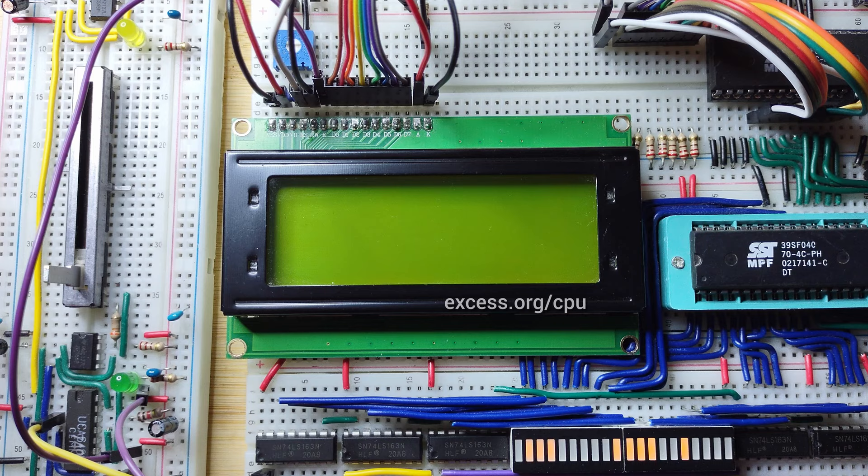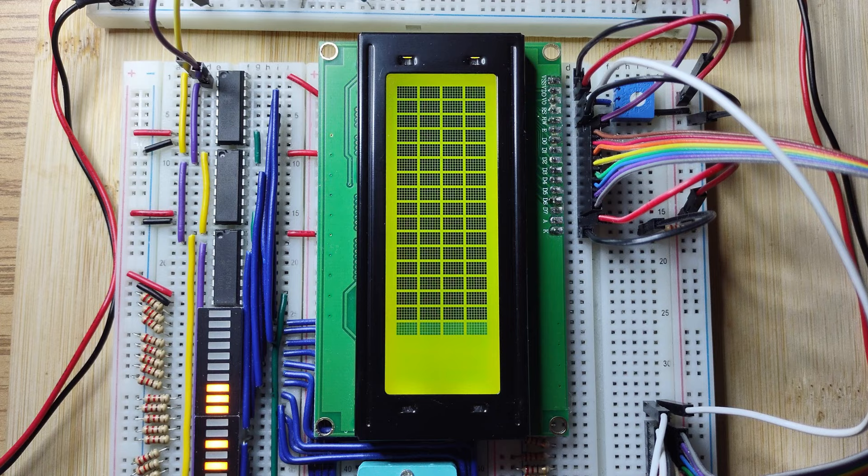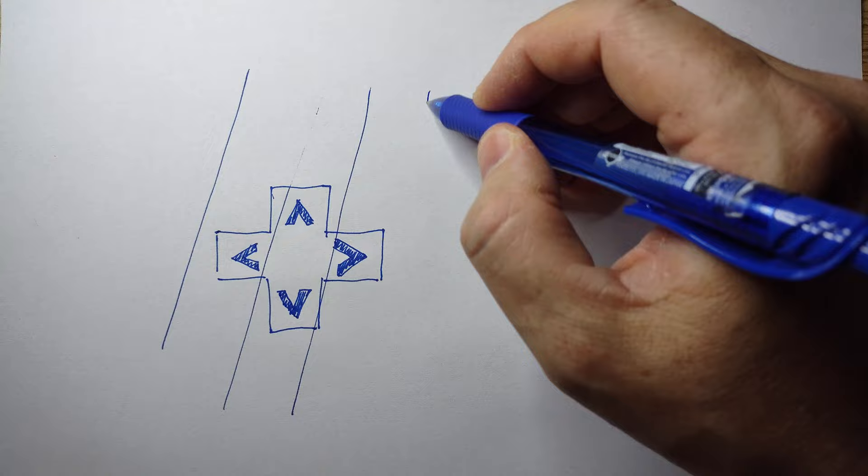Our character LCD will be rotated, so where normally we have four rows of 20, 5x8 pixel characters, now we have 20 rows of 4, 8x5 pixel characters. Six symbols but four characters per row means some symbols will have to share columns. Let's have up and down share the second column, and B and A share the last column.